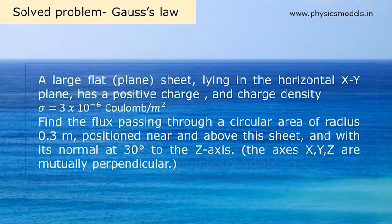We have to find the flux that passes through an area, a circular area, which is inclined to the horizontal. The normal to the circular area therefore makes an angle with the vertical. The x, y, z axes are mentioned, and we have to take care that we are drawing the axes correctly, and that should be mutually perpendicular.